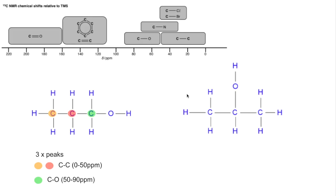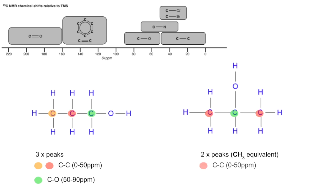For propan-2-ol, the two CH3 carbons are actually in the same environment because the molecule is symmetrical — they are both C–C environments. The green carbon is the only C–O environment, so we'd expect to see just two peaks: the equivalent CH3 carbons resonating between 0 and 50 ppm, and the green C–O carbon between 50 and 90 ppm.